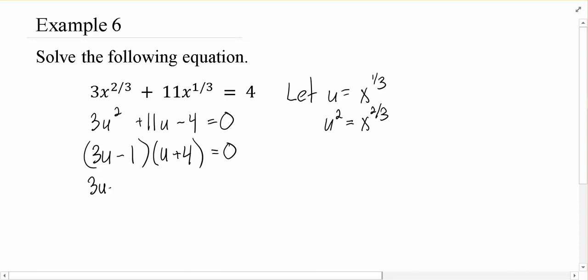Meaning either 3u minus 1 could be 0, or u plus 4 could be 0. Now if I add the 1 to the other side and then divide by 3, I get 1/3. I can subtract the 4 to get negative 4.